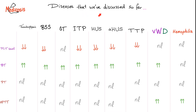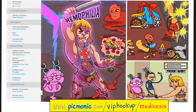Back to our comparison table. For hemophilia: platelet count is normal, bleeding time is normal, PT is normal, and PTT is prolonged. In Picmonic, hemophilia is depicted by He-Man. It's a genetic mutation — here are mutant genes. There is prolonged bleeding, pain bolts, and hemarthroses.